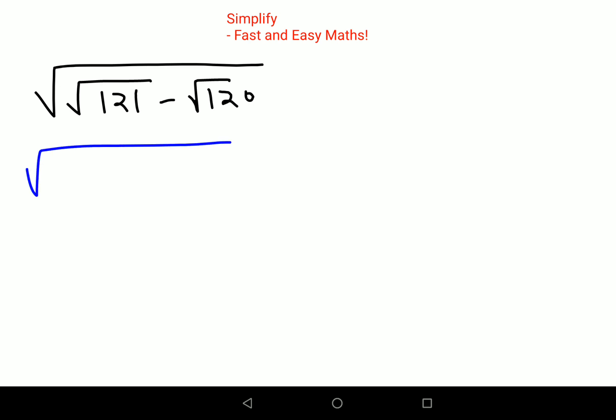We will start with the basics: √121, which is 11, minus √120. We will find factors of 120: 2 and 60, then 2 and 30, then 2 and 15.